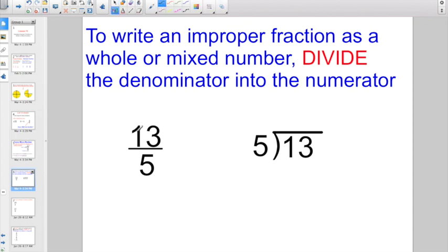So if I had an improper fraction of 13 fifths, divide 5 into 13. 5 is going to divide into 13 two whole times, multiplies back for 10. It's going to subtract for 3. So my remainder is my numerator, and my divisor is my denominator. So instead of having an improper fraction of 13 fifths, it's 2 and 3 fifths.